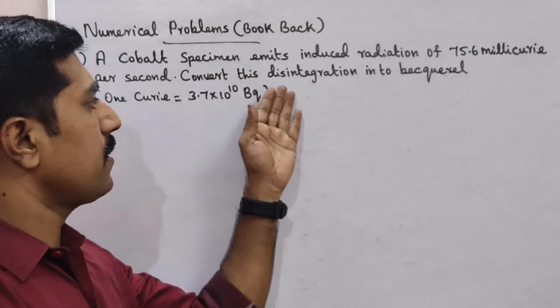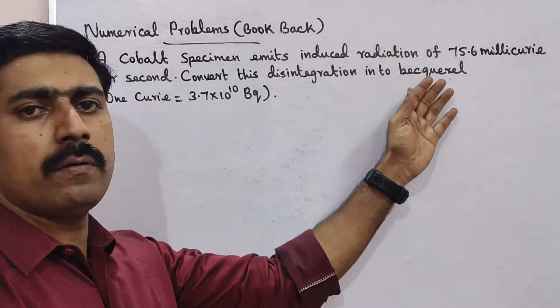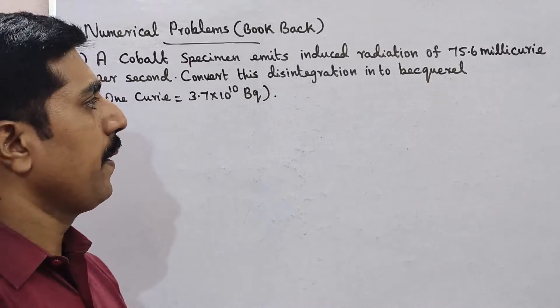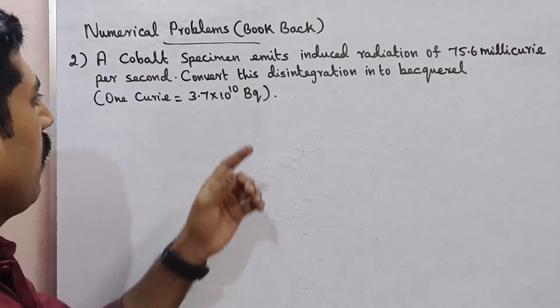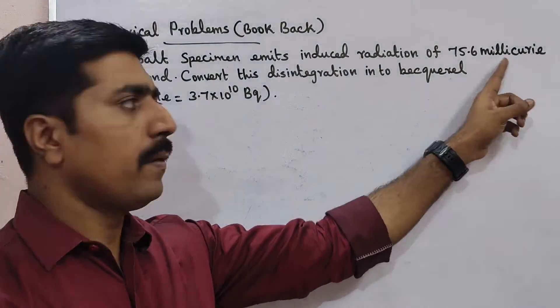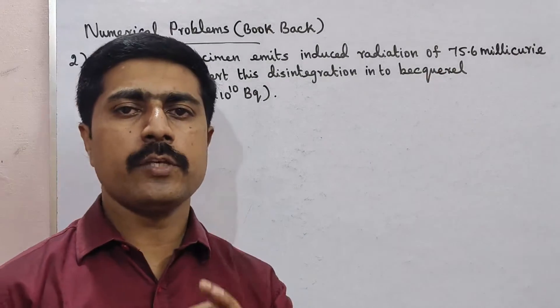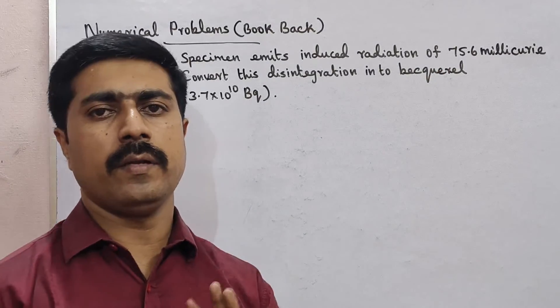Convert this disintegration into becquerel. Curie and becquerel are both radiation units.